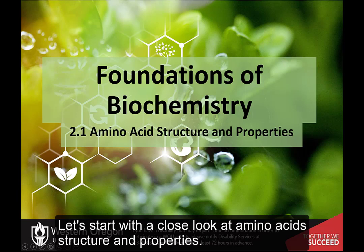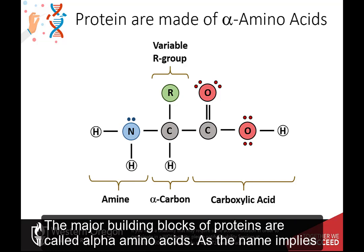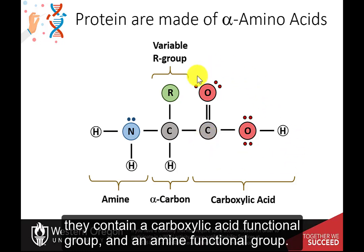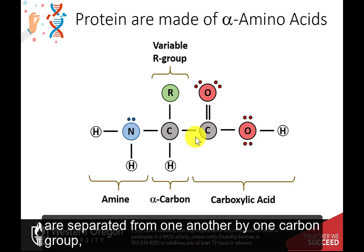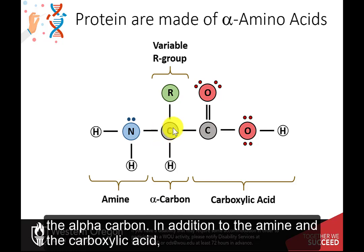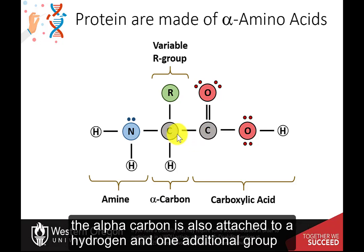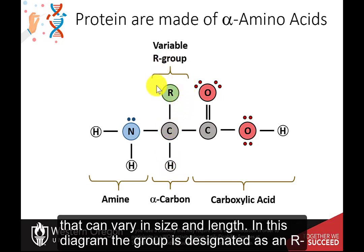Let's start with a close look at amino acid structure and properties. The major building block of proteins are called alpha amino acids. As their name implies, they contain a carboxylic acid functional group and an amine functional group. The alpha designation indicates that these two functional groups are separated from one another by one carbon group, the alpha carbon. In addition to the amine and the carboxylic acid, the alpha carbon is also attached to a hydrogen and one additional group that can vary in size and length. In this diagram, the group is designated as an R group.